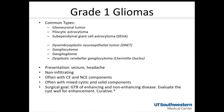The surgical goal for grade one gliomas is gross total resection of both enhancing and non-enhancing disease. You need to evaluate the cyst wall for enhancement: if it enhances, the wall contains active tumor cells and should be removed; if it does not enhance, it is reactive and can be left alone. Classic pilocytic astrocytoma usually has an enhancing cyst wall requiring resection, whereas in hemangioblastoma the cyst wall typically does not enhance and should be left alone. Gross total resection of a grade one glioma is generally curative, though long-term follow-up is still needed.